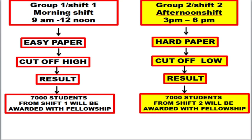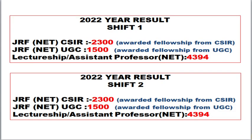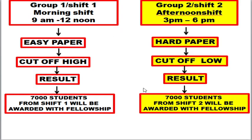They also expect NTA to release a separate result for the morning batch, selecting a certain number of students, and another separate result for the afternoon session where the paper was tough — so the cutoff would be low. Students expect the results to be declared separately for each shift, something like: from Shift 1 they select 7,000 students and from Shift 2 they select the remaining 7,000 students.